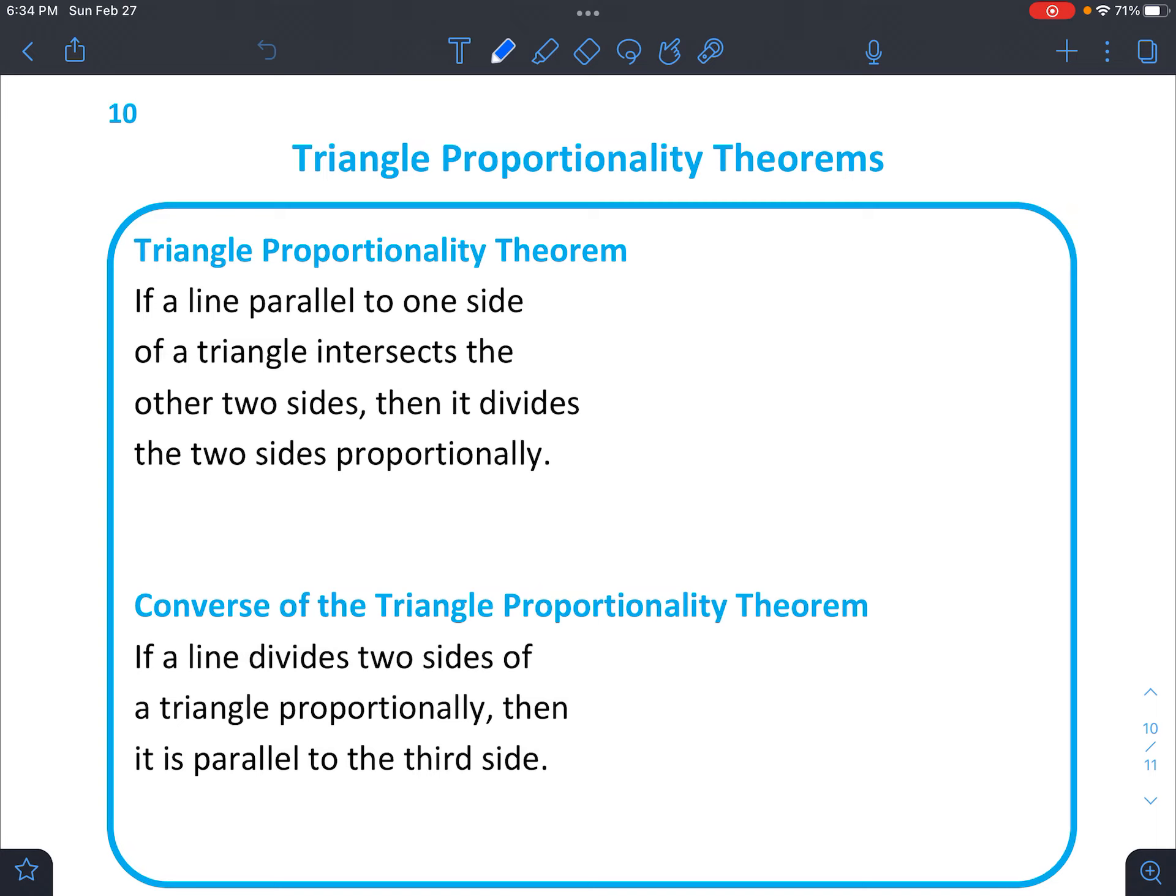So the first one, I want you to envision if a line parallel to one side of a triangle intersects the other two sides. So first let's draw a picture of what that looks like. Draw a triangle, maybe something kind of like this. And then draw a line that's parallel on the interior, parallel to this side on the end, and draw two little marks showing that these are parallel.